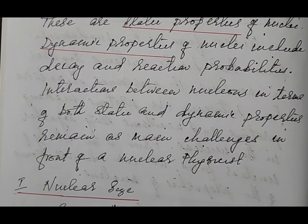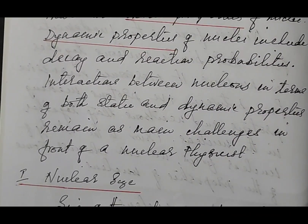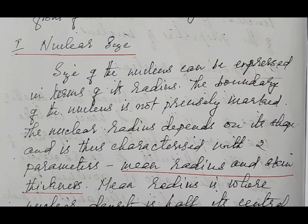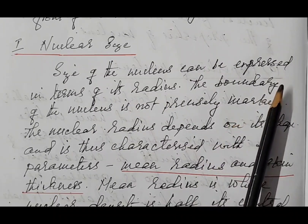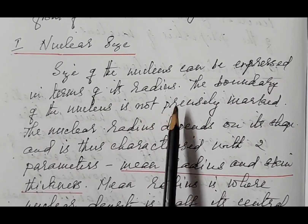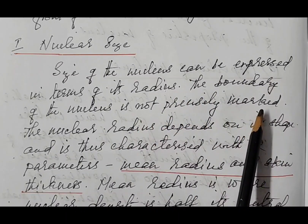Next we will see nuclear size. If the shape of an object is taken to be spherical, then the size of the object is measured in terms of its radius. In the case of the nucleus, the shape is not strictly spherical, but in general we take it as a sphere. So the size of the nucleus can be expressed in terms of its radius. The boundary of the nucleus is not precisely marked.